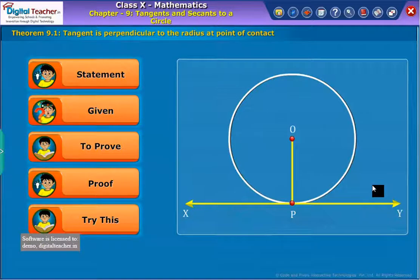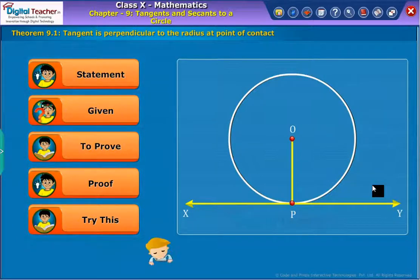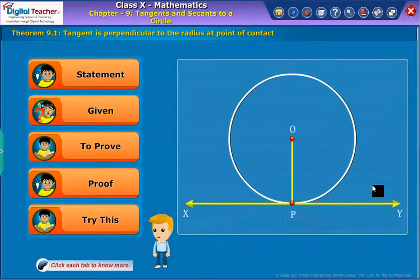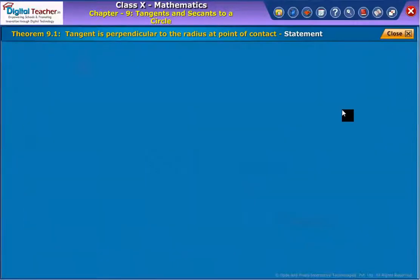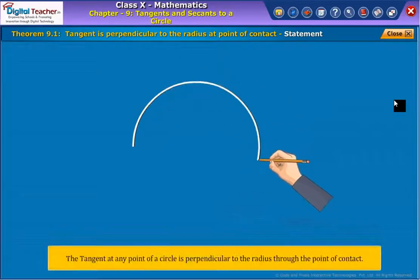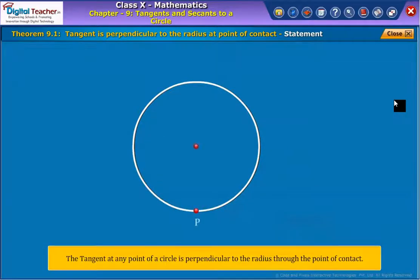Let's discuss the theorem: tangent is perpendicular to the radius at point of contact. Click each tab to know more. The theorem states that tangent at any point of a circle is perpendicular to the radius through the point of contact.